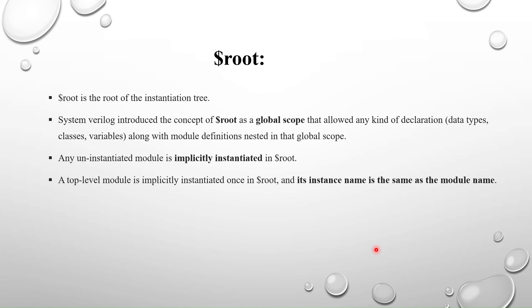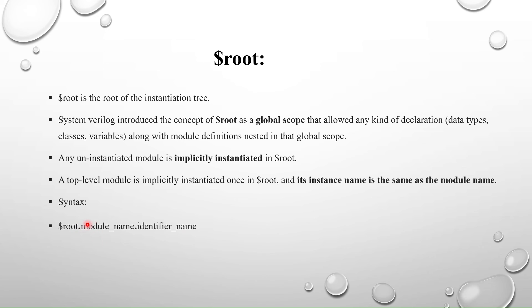To use $root in code, the syntax is: $root dot the module name dot the identifier name. Here you do not use the scope resolution operator — you use dot notation: $root dot the top module instance name dot the identifier you want to access.